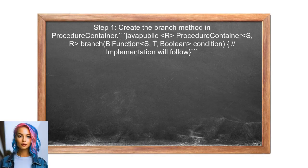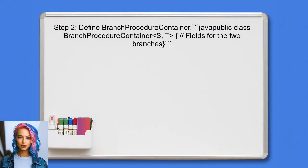To implement a branching method in the procedure container, the user should first create a new method called branch. This method will take a 'by' function that defines the condition for branching. Next, the user needs to define how to handle the two branches. This involves creating a new class, BranchProcedureContainer, that will manage the branching logic.